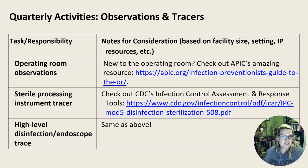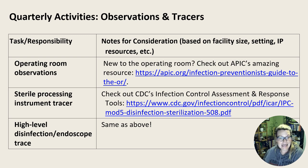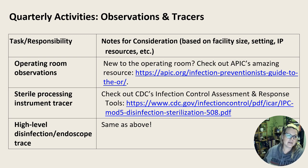Moving into observations and tracers, we talked about environmental rounding in the last episode from a monthly perspective. But think about some high-risk areas you might want to be visiting more frequently — at least quarterly if not more, if you have the time. Those places include your operating rooms, your sterile processing departments, and anywhere where you're doing high-level disinfection and endoscope reprocessing.